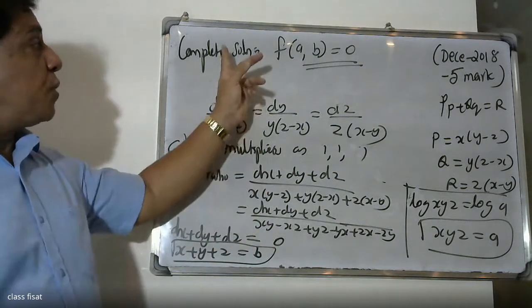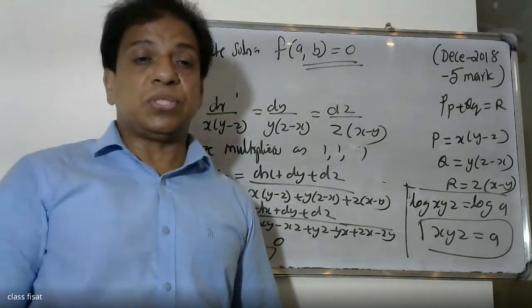Therefore our complete solution will be f(a,b) = 0.